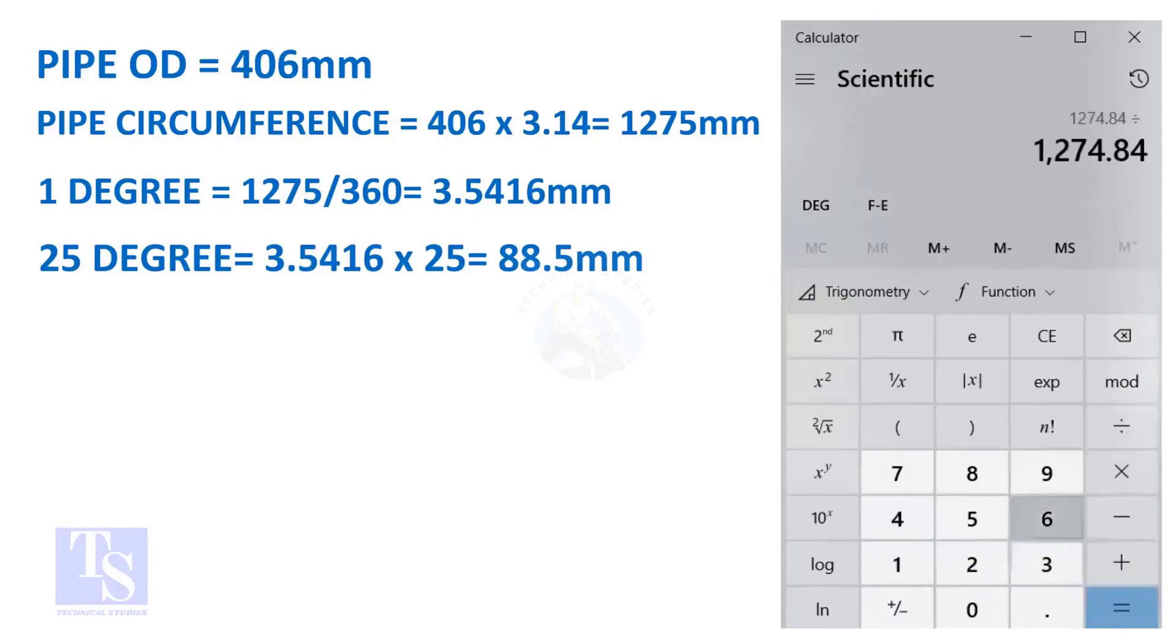And finally, multiply the 1 degree arc length by 25. Now you have the arc length of 25 degrees. You can apply this formula to get the arc length of any degree.